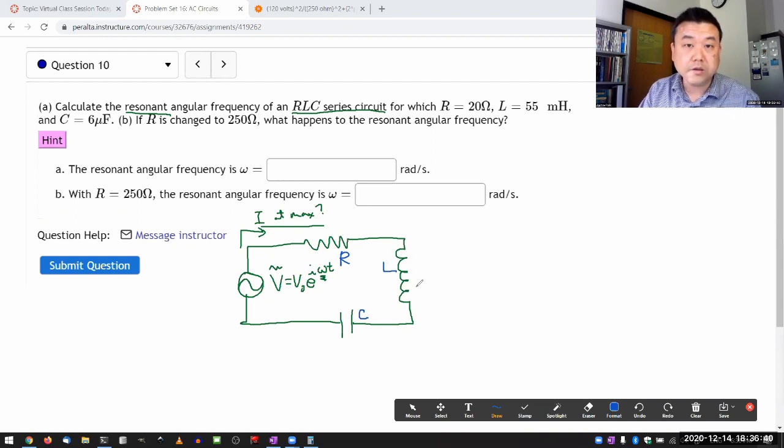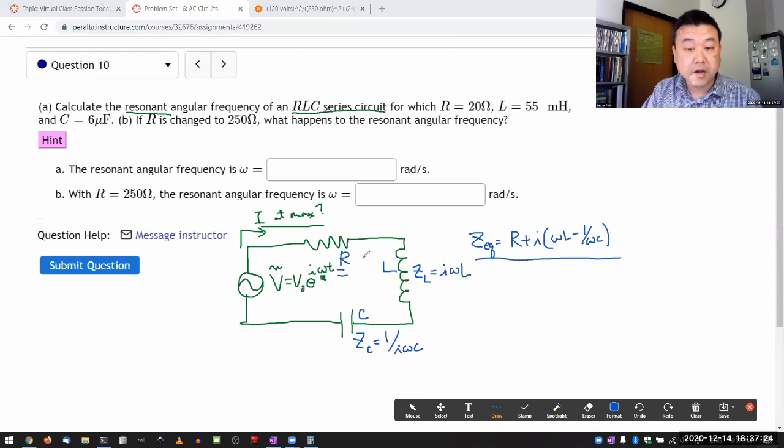So our series RLC circuit like this, you can analyze it almost like a series circuit with three resistors. One of them is an actual resistor. And the inductor is kind of like a resistor with resistance i omega L. And the capacitor is kind of like a resistor with resistance one over i omega C. These are the complex impedances. And with these series elements, you can calculate the equivalent impedance: R plus i omega L minus one over omega C.